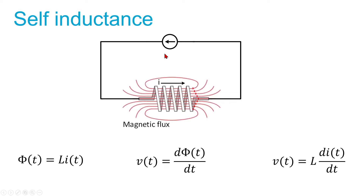Let us start with self-inductance. If you have one coil, flux is inductance multiplied by current, and Faraday's induction law says that voltage is d-phi/dt. Taking the derivative of the flux equation, we get V = L·di/dt. This is the fundamental equation for an inductor.